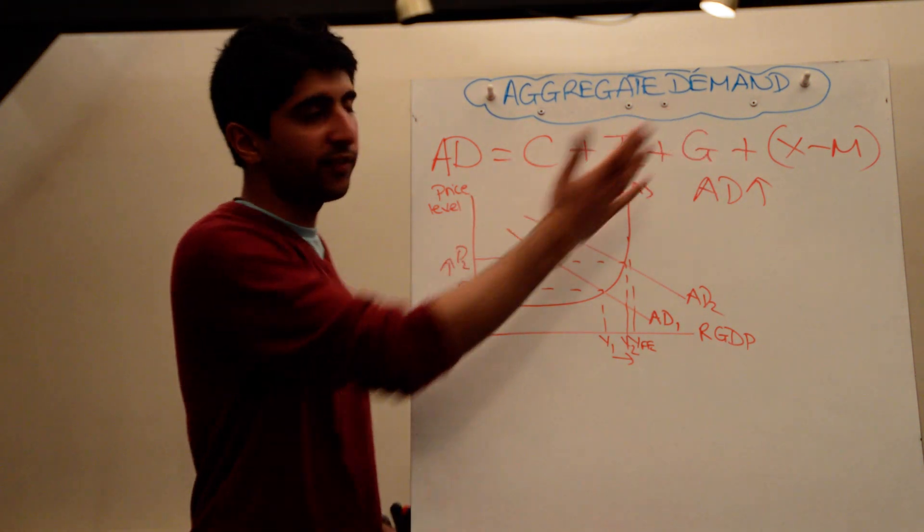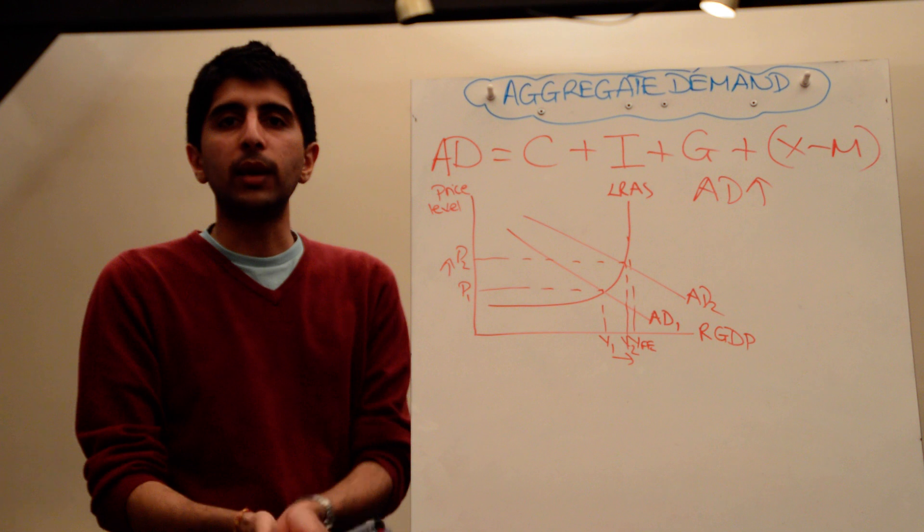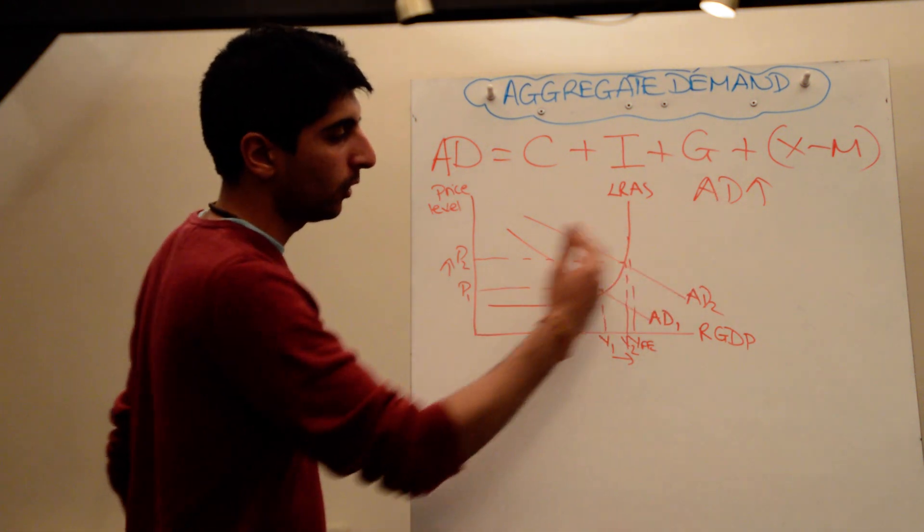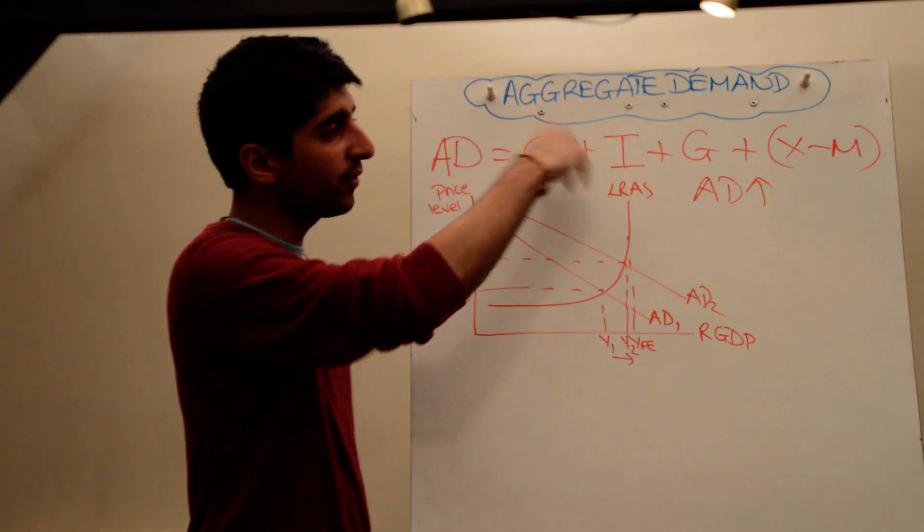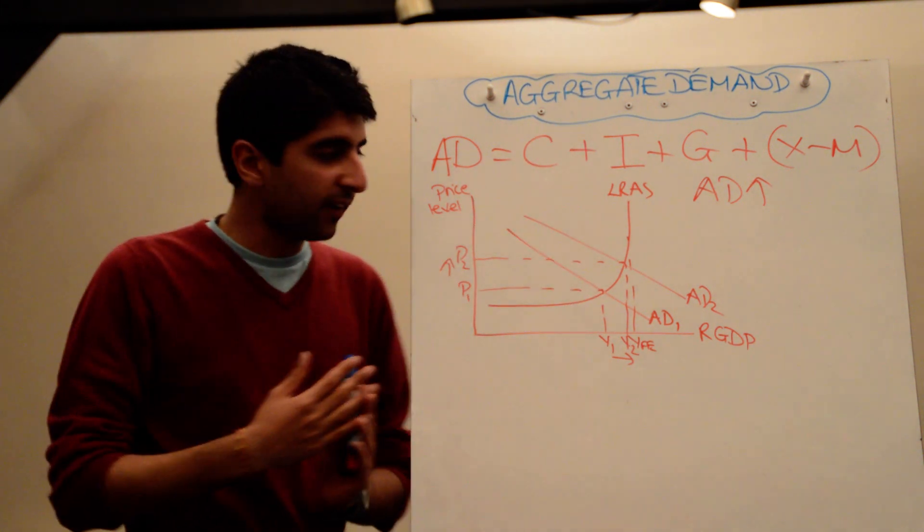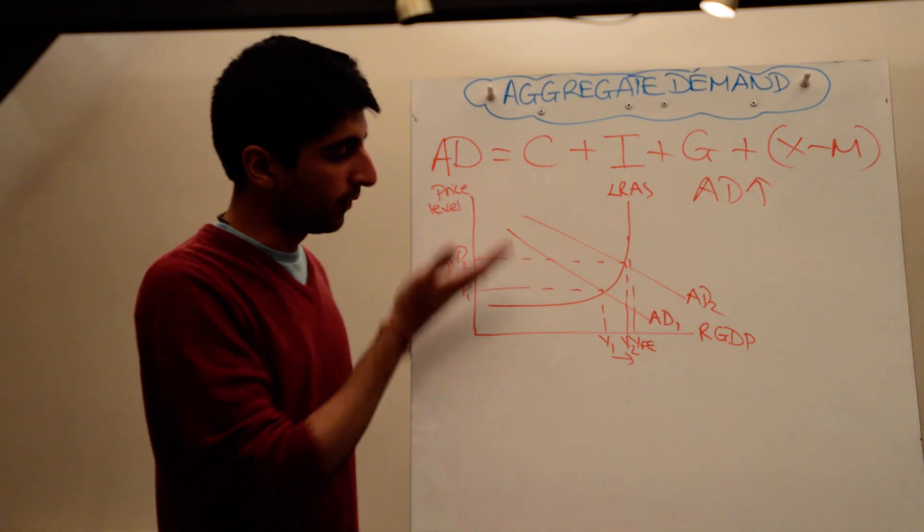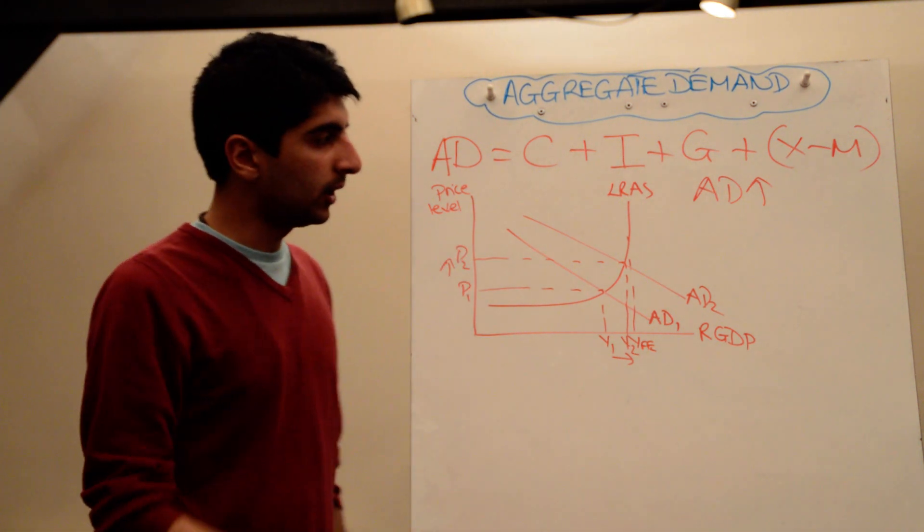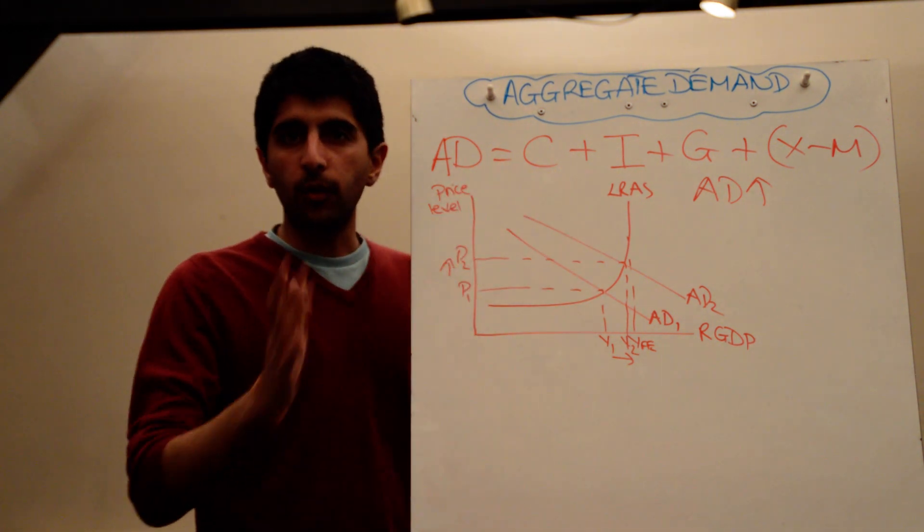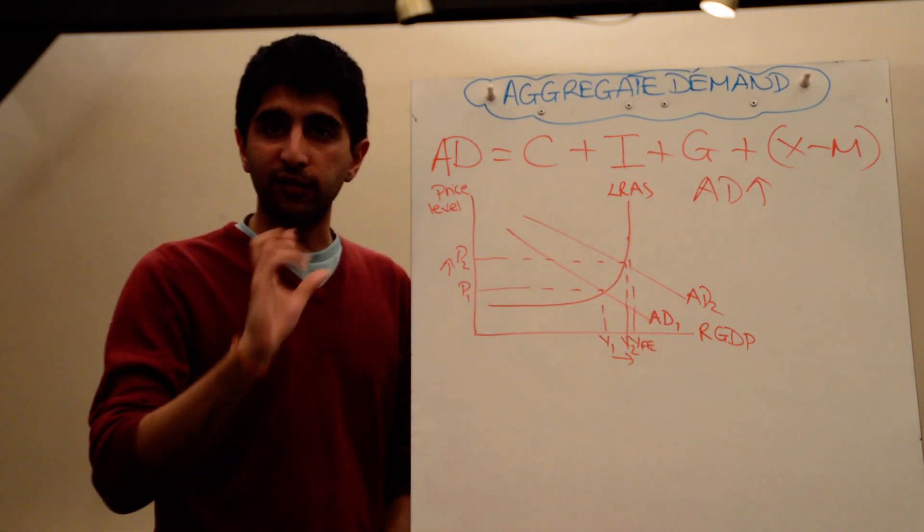Any one of these factors can increase these variables, which therefore will lead to an increase in aggregate demand, where aggregate demand will shift to the right. Vice versa, if any of these variables fall, AD will shift to the left, and you see the opposite: a reduction in growth, an increase in unemployment, a reduction in demand for inflationary pressure. But again, watch my video on the effects of these variables to fully understand that.